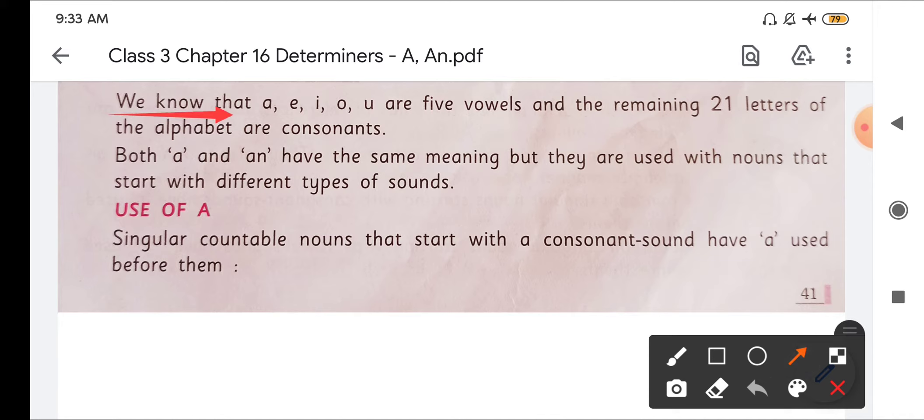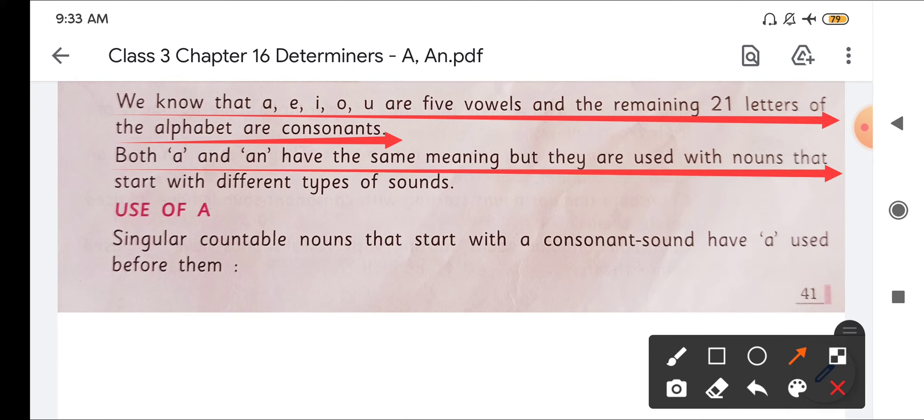We know that a, e, i, o, u are five vowels and the remaining 21 letters of the alphabet are consonants. Both a and an have the same meaning but they are used with nouns that start with different types of sounds.